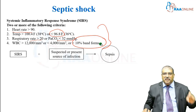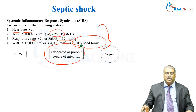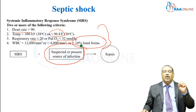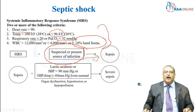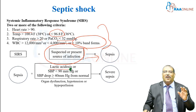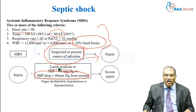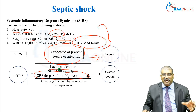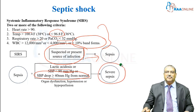If this systemic inflammatory response syndrome is present in addition to a suspected or confirmed source of infection, it is called sepsis. And this sepsis, in addition with lactic acidosis, or systolic blood pressure less than 90 millimeter of mercury, or a drop of systolic blood pressure of greater than 40 millimeter of mercury from normal, in addition with organ dysfunction, hypotension, or hypoperfusion, it is called severe sepsis.